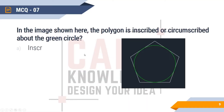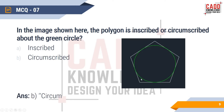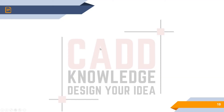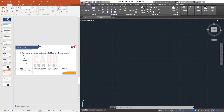MCQ7: In the image shown, is the polygon inscribed or circumscribed about the green circle? Inscribed means the polygon is inside the circle; circumscribed means the polygon is outside the circle. Since the polygon is outside the circle, the answer is circumscribed.